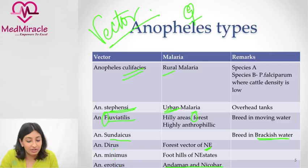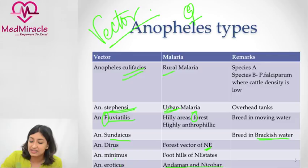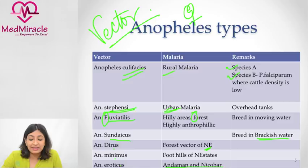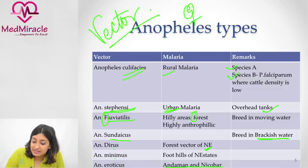Anopheles culicifacies has two species: Species A is the major one affecting humans, carrying both P. vivax and P. falciparum. Species B is associated with areas of high cattle density — it mainly affects cattle. Urban malaria occurs in open spaces and overhead tanks. Anopheles fluviatilis breeds in moving water in hilly forest areas, and Anopheles sundaicus breeds in brackish water.